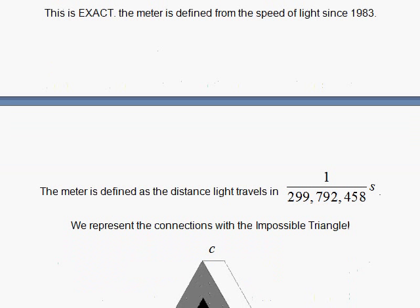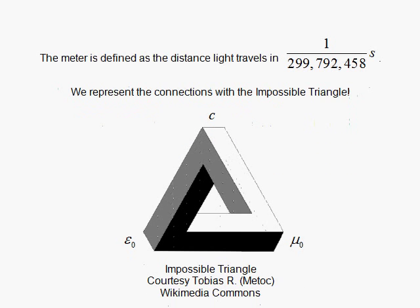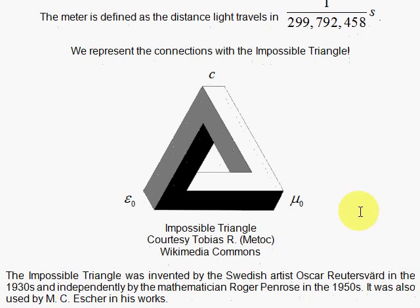So we represent this mystery with the impossible triangle here. We have special relativity, we have electric force physics and magnetic force physics, these two constants, and they're related.